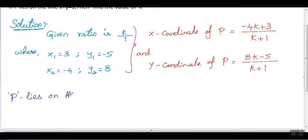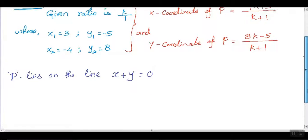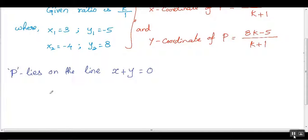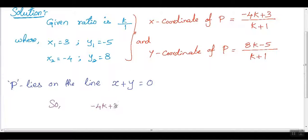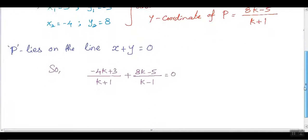Now plug these coordinates into the given line equation. P lies on the line x plus y equals zero. So substitute x-coordinate as (-4k + 3) divided by (k + 1) plus (8k - 5) divided by (k + 1) equals zero.